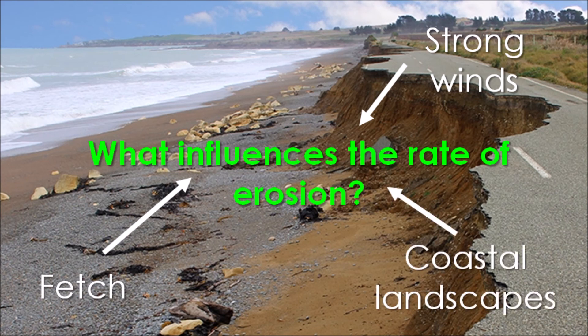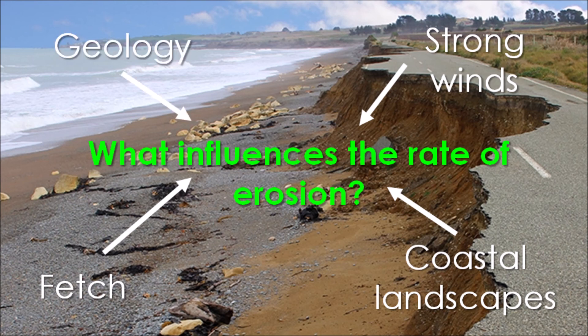We've then got coastal landscapes influencing the rate of erosion. For example, if we have a sheer, sudden drop cliff face coming into contact with the sea with no beach between the sea and the cliff face, we're potentially going to see an increase in erosion at the base of the cliff, because there is no beach between the waves and the cliff to protect it from erosion.